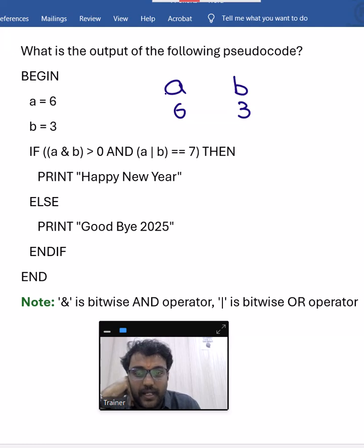So here A and B are bitwise and operators. So 6 and 3 we need to perform. Is that result greater than 0 or not, we have to check. As this is a bitwise operator we have to convert 6 into binary digit. 110. 3 into binary digit. 011.